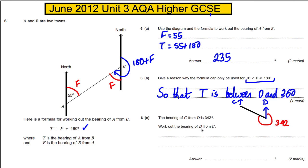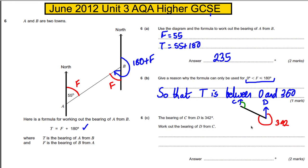We need to work out the bearing of D from C — what is this bearing here? Clearly the whole angle adds up to 360, so this part must equal 18. Then this bearing must be 180 subtract 18, which gives 162 degrees.